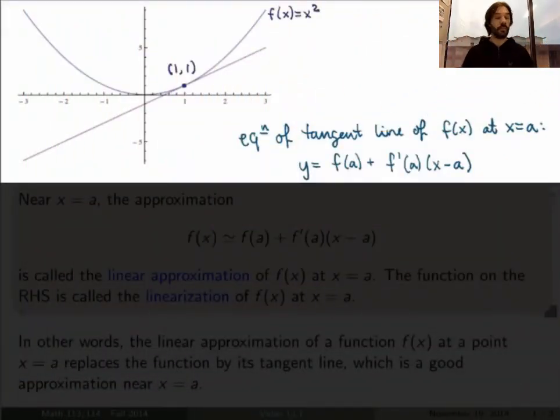So let's first step back and recall what the definition of the tangent line is. If we have a function f, the equation of the tangent line of f at a point x equals a is given by y equals f(a) plus f'(a) times (x minus a), so f prime of a here is the slope of the tangent line.